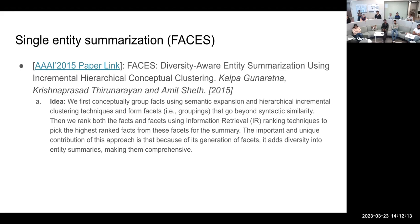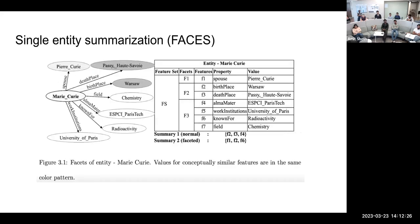The first one is single entity summarization. What it means is, for a given entity, can we have several features merged together? So let's say there is one example he has in his paper. It talks about Marie Curie and then her birthplace, her deathplace, her spouse, her work institution, her field in which he worked in. So basically, these are all features, but then can we group these features at some kind of facets? So it talks about faceted entity summarization.